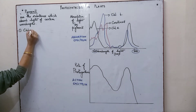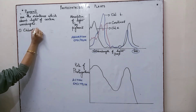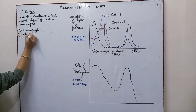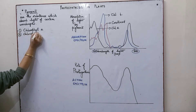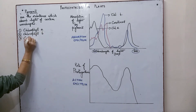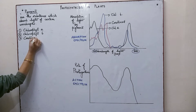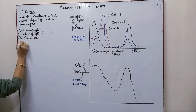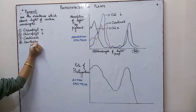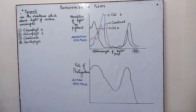The four types are: chlorophyll A, chlorophyll B, carotenoids, and xanthophylls. These are the four major pigments found in the higher group of plants.